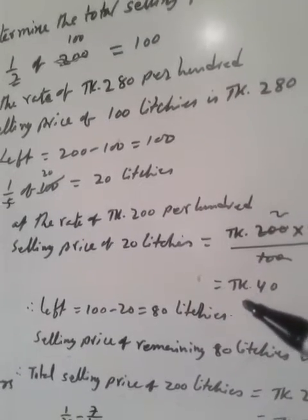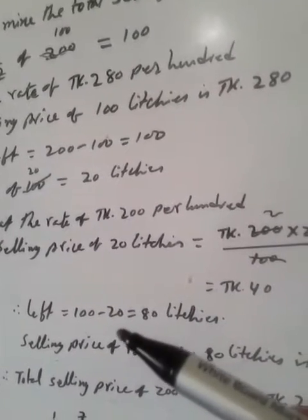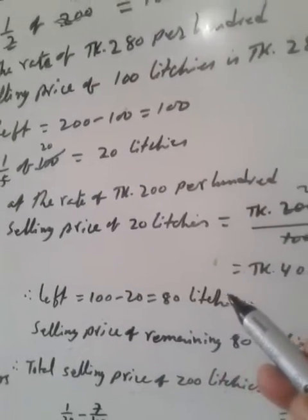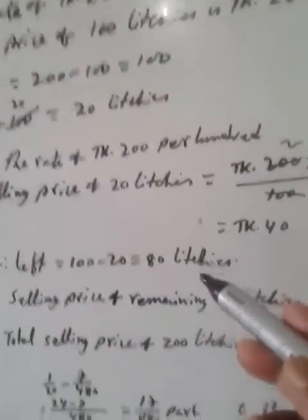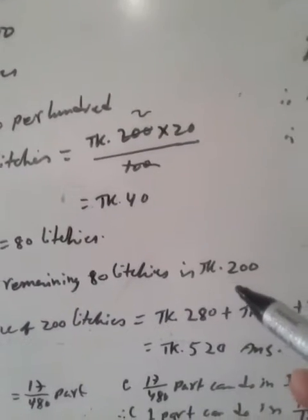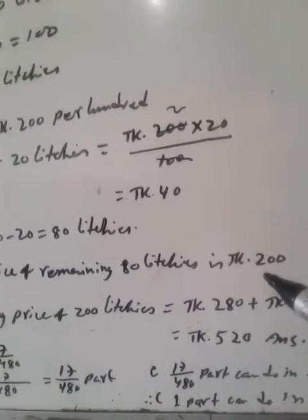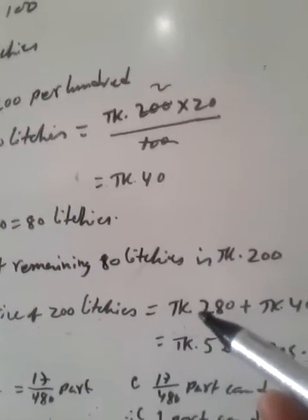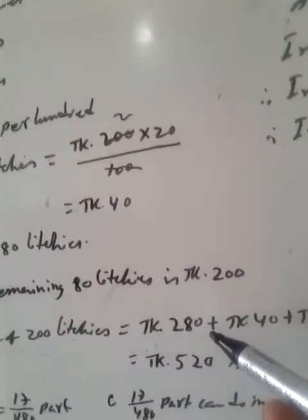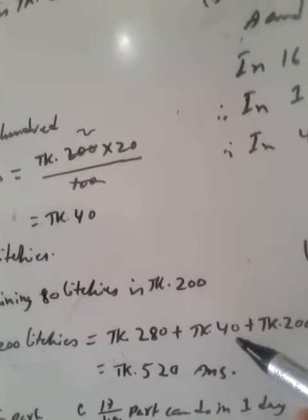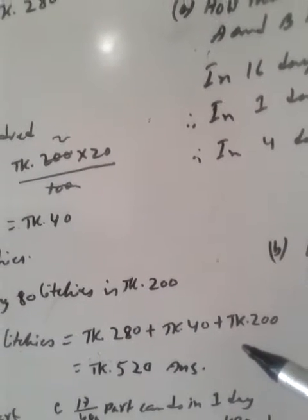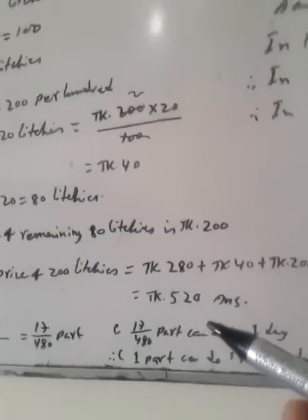Left with him: 100 minus 20 equals 80 litchis. He sold these 80 litchis for 200 Taka. Total he sold: first 100 litchis for 280 Taka, 20 litchis for 40 Taka, and 80 litchis for 200 Taka. Total selling price is 520 Taka.